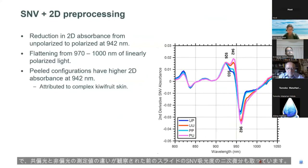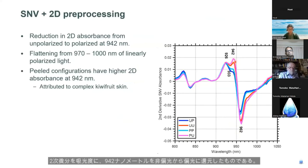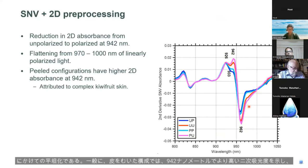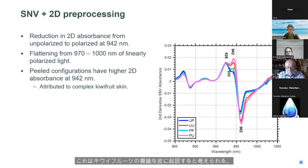We also took the second derivative of the SNV absorbance, where we observed differences between co-polarized and unpolarized measurements. One difference is the reduction of the second derivative absorbance at 942 nanometers from unpolarized to polarized light. Another interesting feature is the flattening from 970 to 1000 nanometers for polarized light configurations. In general, the peeled configurations have a higher secondary absorbance at 942 nanometers, which we attribute to the complex kiwifruit skin.